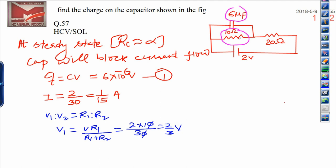How much voltage is dropped by the 10 ohm resistor? That is 2/3 volt. Now, in order to calculate the charge, I need the voltage V₁ only.